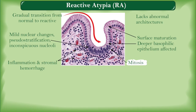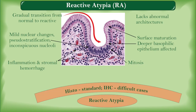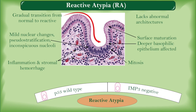Mitotic activity may be brisk. Although histomorphology remains the standard, in difficult cases a wild-type P53 stain in conjunction with negative IMP3 staining may support a diagnosis of reactive atypia over dysplasia.